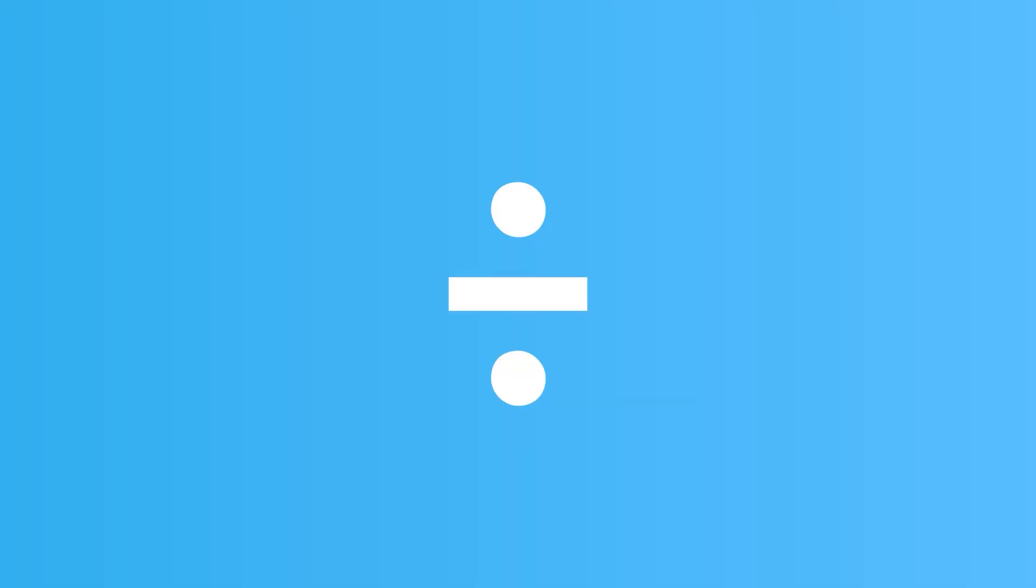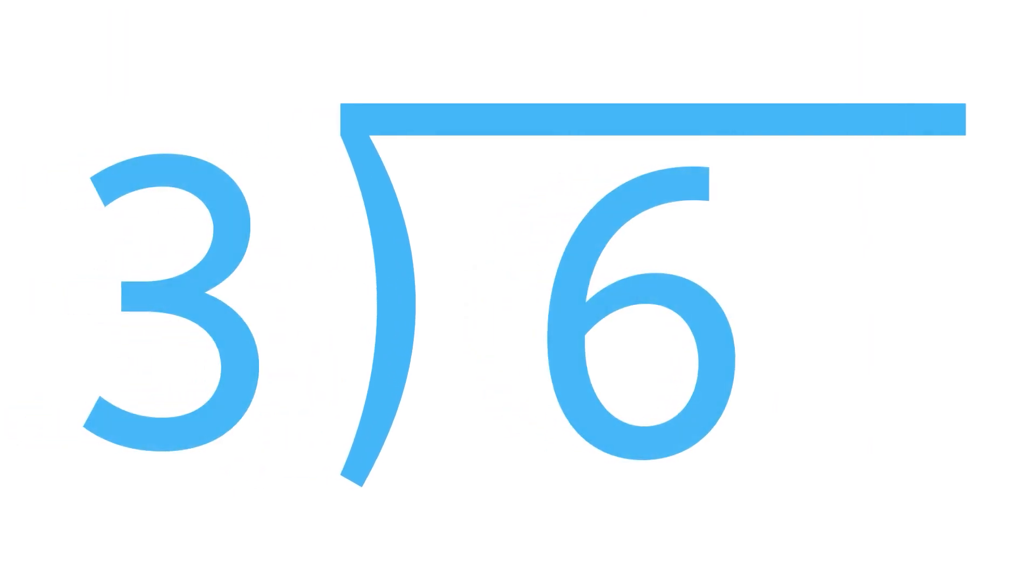Division problems can be written in different ways. Sometimes you'll see them written with this symbol, like 6 divided by 3. Other times you'll see them written like this. Both of these mean that the number 6 is being divided by the number 3.